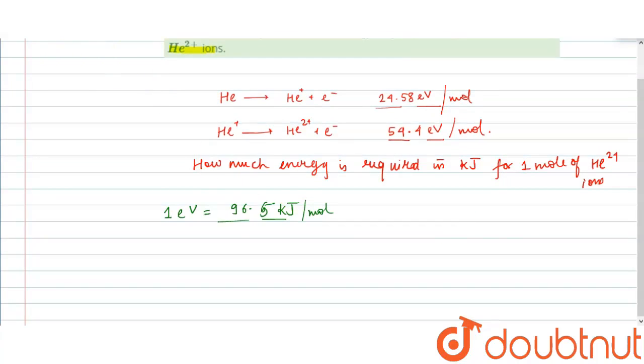So now the sum of the energy required for He to He 2+ would be 24.58 plus 54.4 electron volt. This would give us 78.98 electron volt.